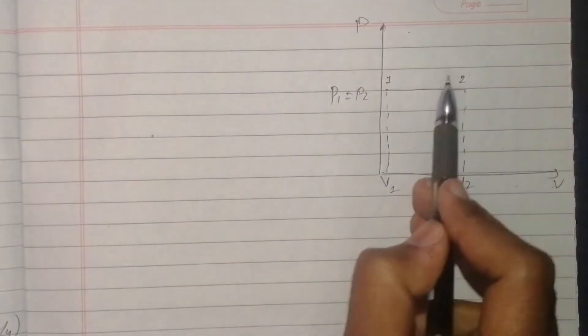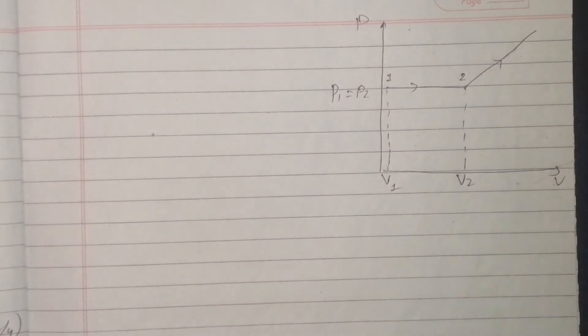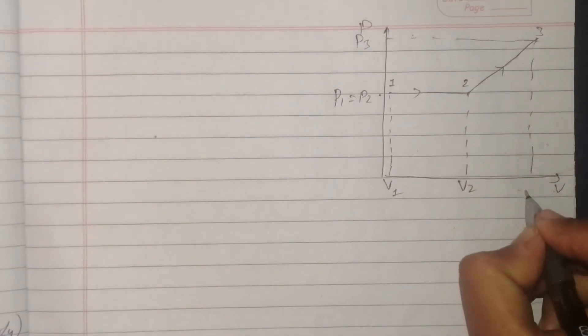Drawing the PV diagram: Process 1 to 2 is at constant pressure P1 = P2. Process 2 to 3 shows both pressure and volume increasing linearly as the spring engages. The diagram shows an upward sloping line from state 2 to state 3.